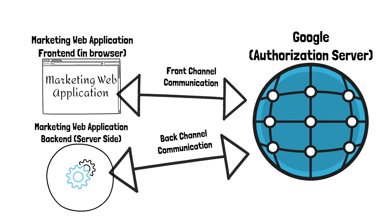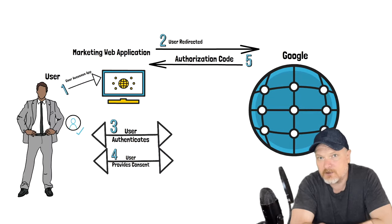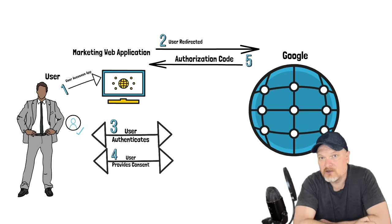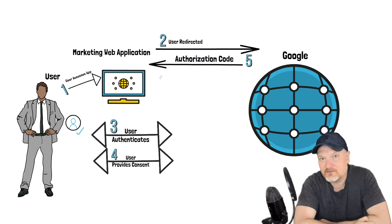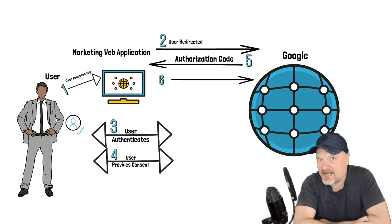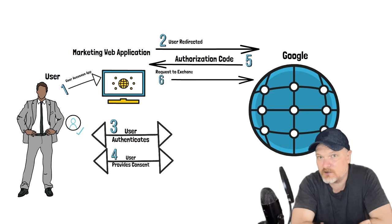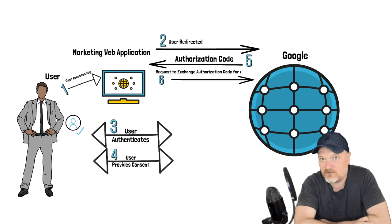Single page applications written in JavaScript would use the implicit code flow where the access token is issued directly to the client via front channel communication, which is not as secure as the authorization code flow. In the authorization code flow, an authorization code is exchanged for the access token via a back channel — server to server. Due to JavaScript SPAs running in the browser being inherently less secure, the implicit flow was deemed appropriate for those scenarios.